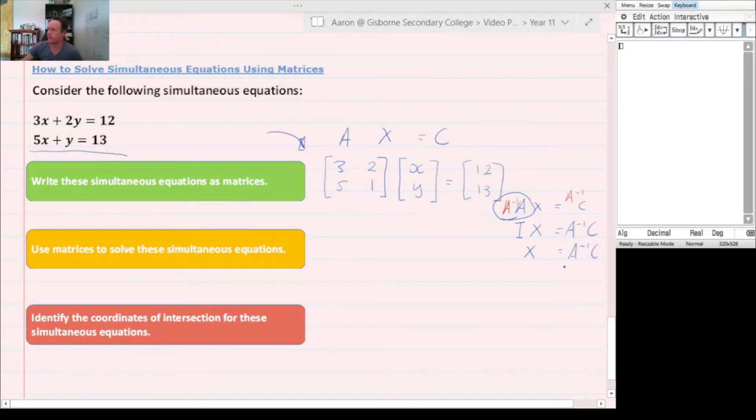Let's pop this into our calculator. In Math 2 on the Casio, I'll pop in 3, 2, 5, 1 and call that A. Then I'm going to pop in C's values—don't pop in X because I don't need it. All I'm going to do is multiply the inverse of A by C. So next one is C, which is 12 and 13.